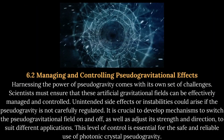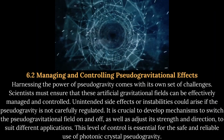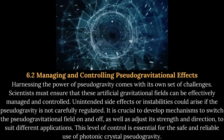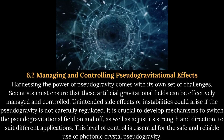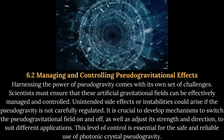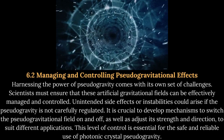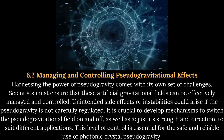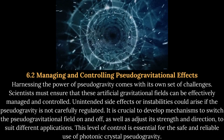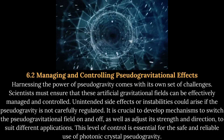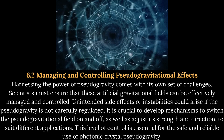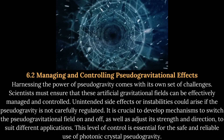6.2 Managing and controlling pseudogravitational effects. Scientists must ensure that artificial gravitational fields can be effectively managed and controlled. Unintended side effects or instabilities could arise if the pseudogravity is not carefully regulated. It is crucial to develop mechanisms to switch the pseudogravitational field on and off, as well as adjust its strength and direction to suit different applications. This level of control is essential for the safe and reliable use of photonic crystal pseudogravity.